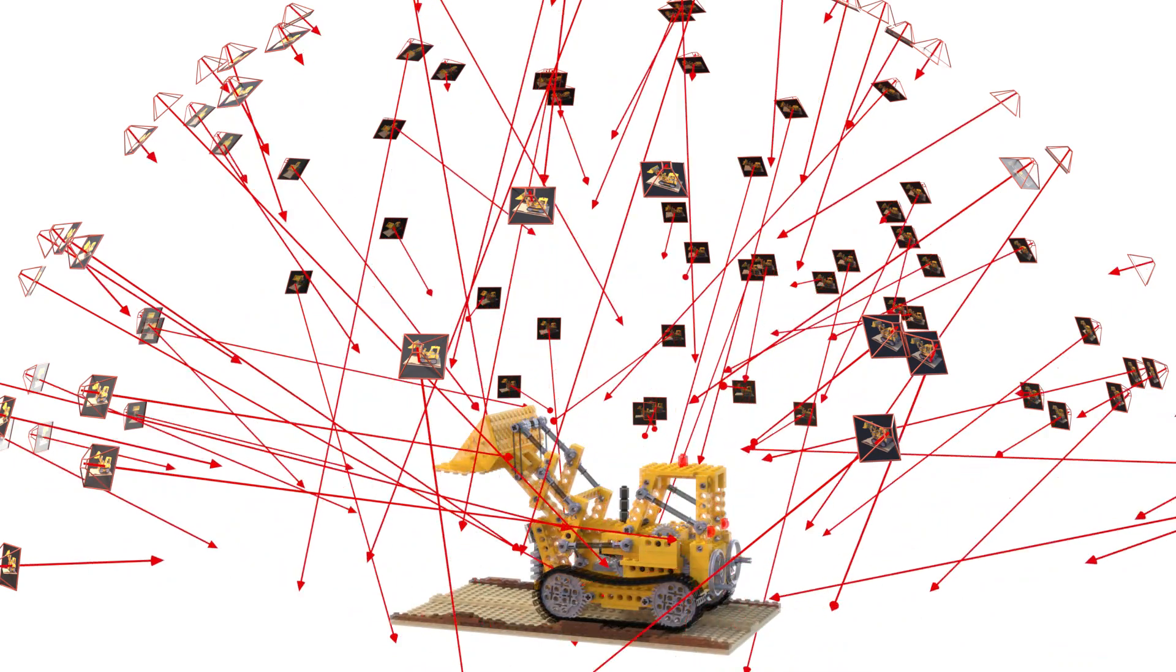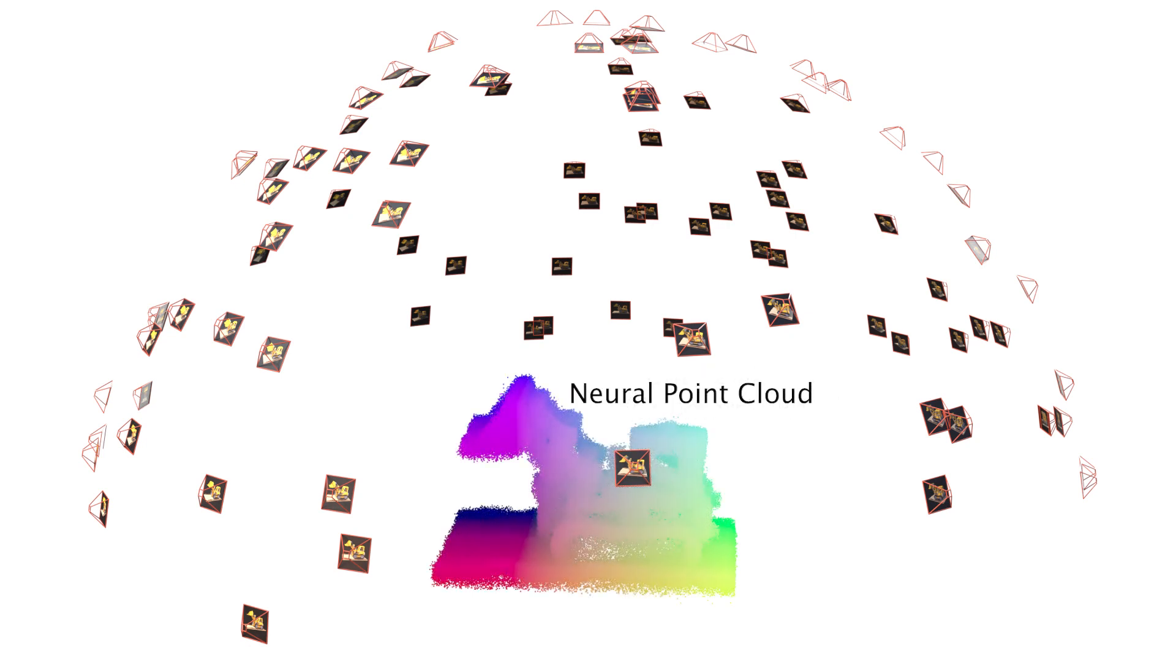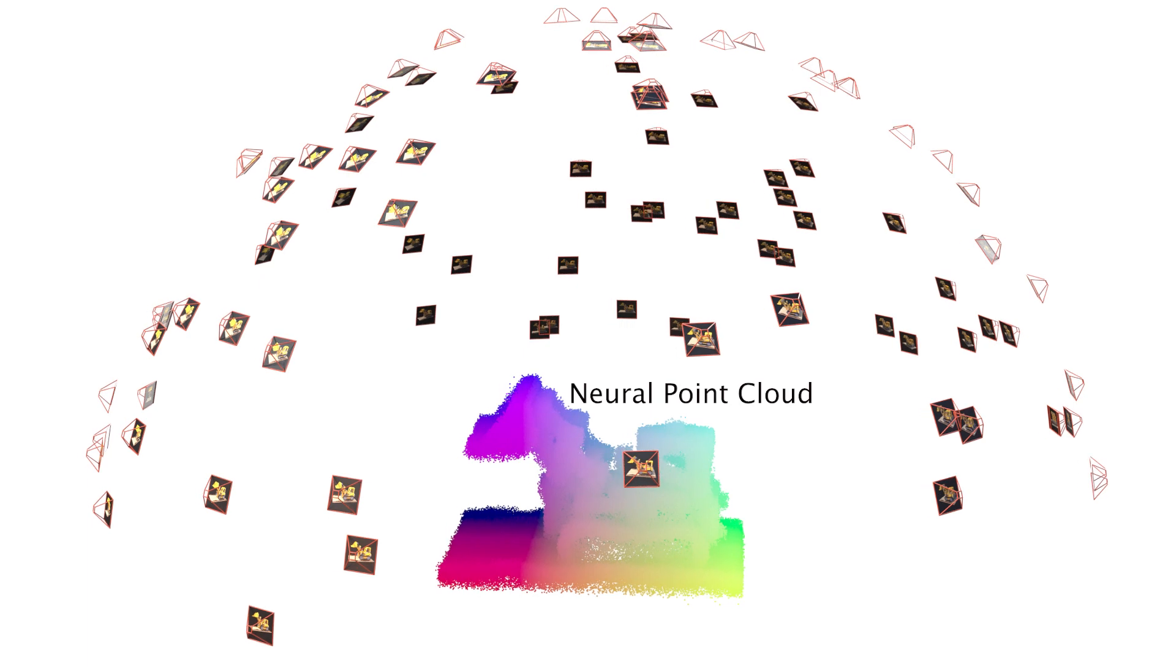Since NRF is not aware of scene geometry, its shading sampling is inefficient. Using a single network to encode the scene also makes it hard to scale and converge. To address these issues, we leverage multi-view reconstruction methods to quickly reconstruct the point cloud. PointNRF then installs the neural features on each point and obtains a neural point cloud.